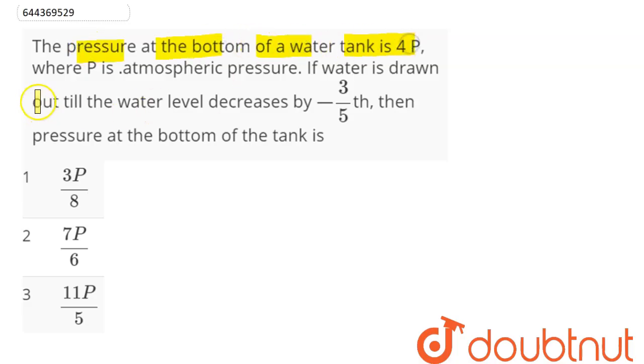Pressure at the bottom of a water tank is 4P, where P is the atmospheric pressure. If water is drawn out till the water level decreases by three-fifths, then pressure at the bottom of the tank is?